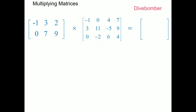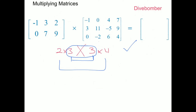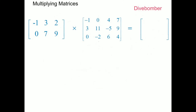In this example we have a 2 by 3 matrix multiplied by a 3 by 4 matrix. Since the inside numbers match (columns of first = rows of second = 3), we can do this multiplication and the answer matrix will be 2 by 4. For row 1 column 1: negative 1 times negative 1, plus 3 times 3, plus 2 times 0 gives 10, which goes into row 1 column 1 of the answer matrix. For row 1 column 2: negative 1 times 0, plus 3 times 11, plus 2 times negative 2 gives 29, which goes into row 1 column 2.